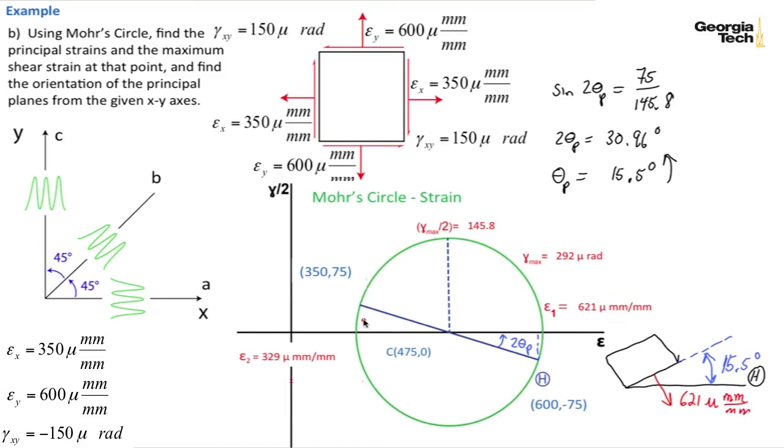I turn 180 degrees on Mohr's circle which is 90 degrees on my block. And I get positive 329 mu millimeters per millimeter. And we're going to have equal on the other sides. And so that's a good oriented stress block.